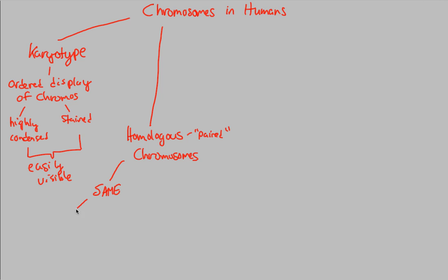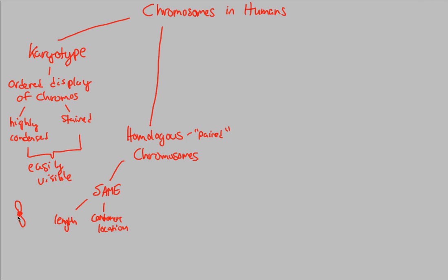Homologous chromosomes have many of the same characteristics because they're paired and always together. They have the same length and the same centromere position. The centromere is that central region of a chromosome. If I draw one chromosome and then draw its homologous pair — another one that looks almost exactly like it — they have almost the same exact length and the exact same location of the centromere, that middle region.